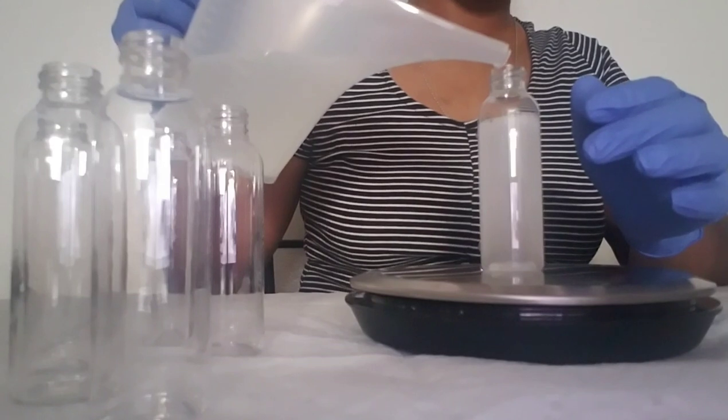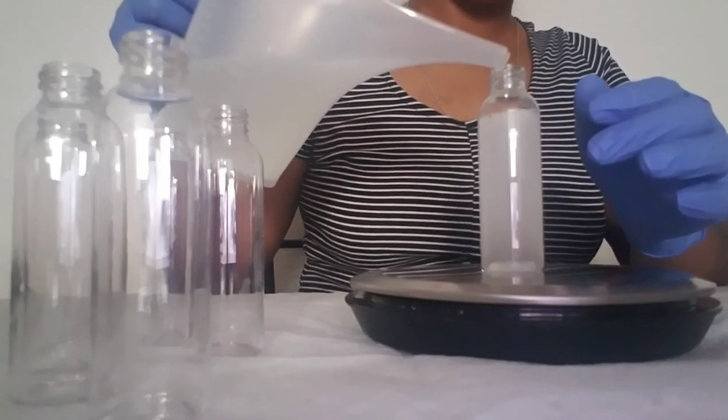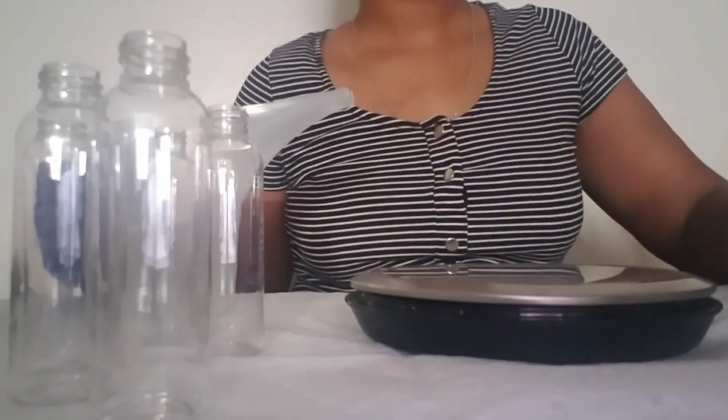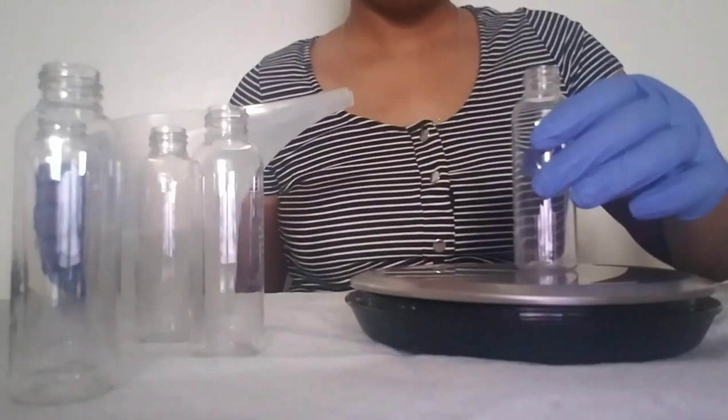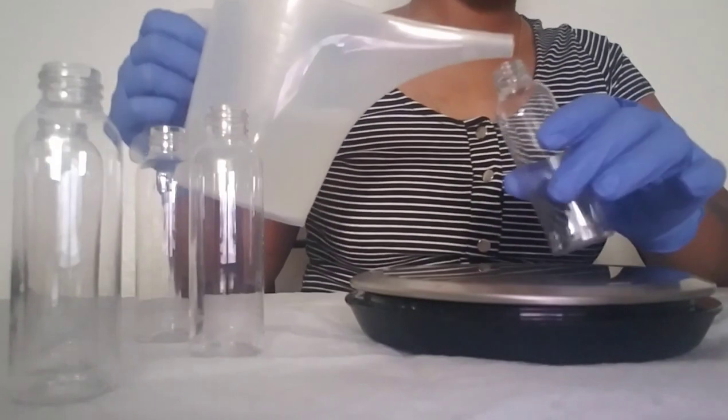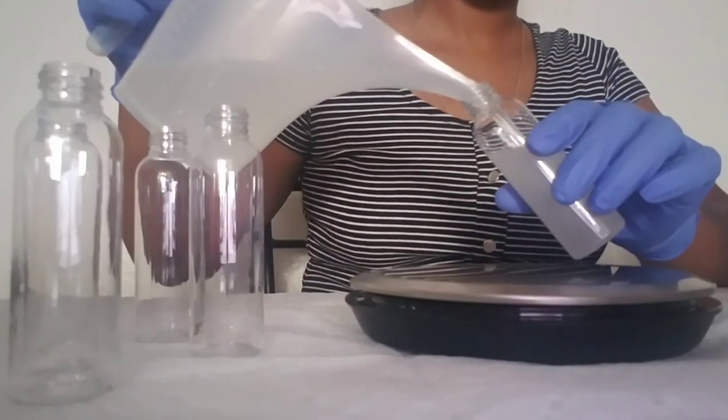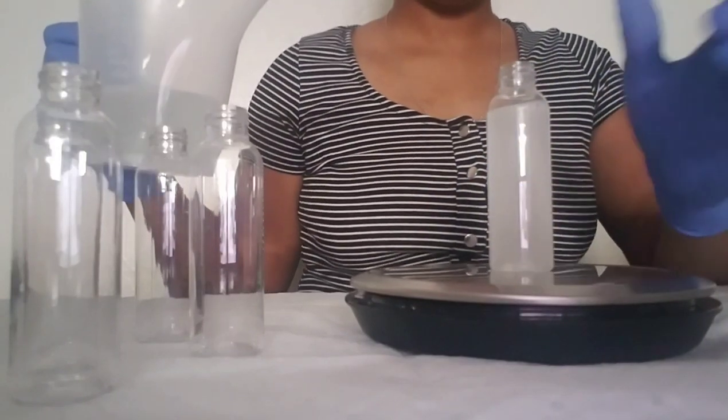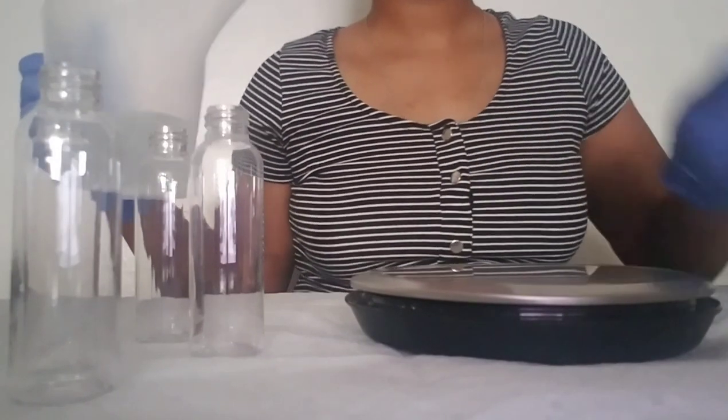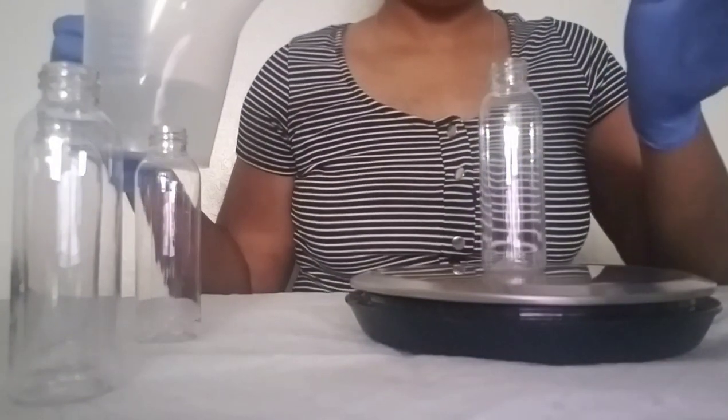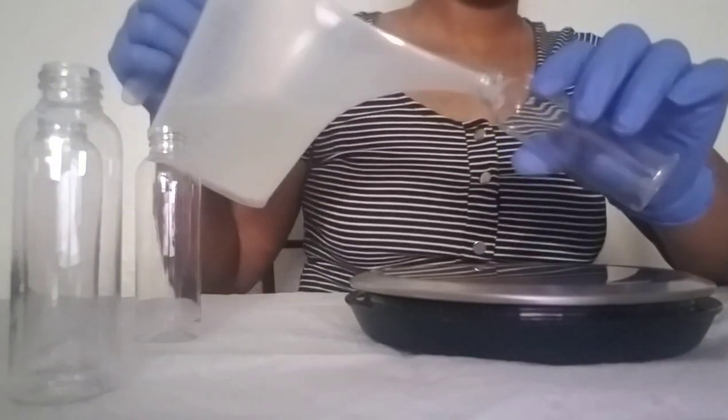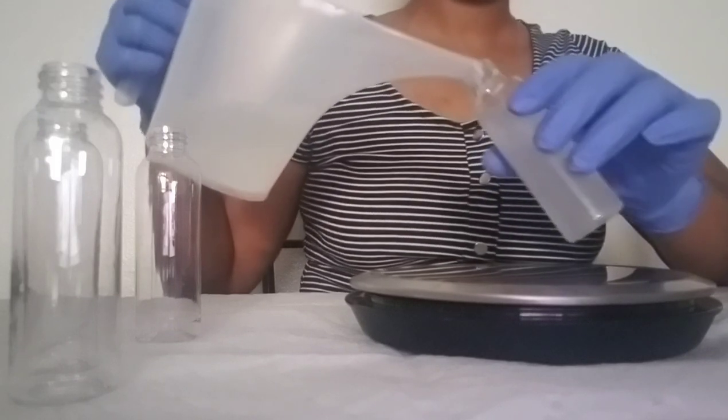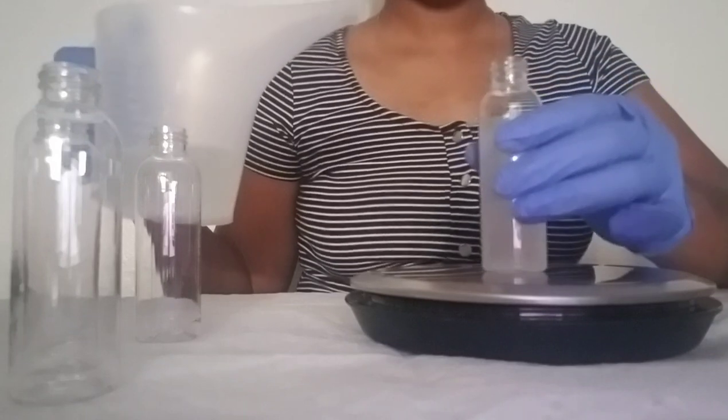And I normally have extra liquid left inside my measuring cup, so after I make sure that each bottle has 2 ounces, I do go back with the extra and fill all the bottles up with the extra that's left inside. So right here, I'm just measuring out—each bottle is 2 ounces. I put the bottle on first to make sure that the scale is zeroed out, and then I fill it up.